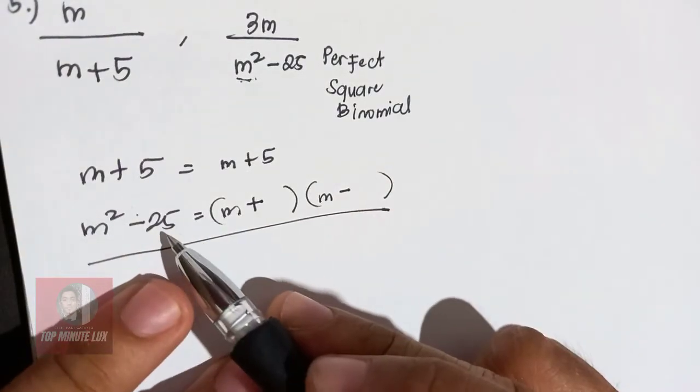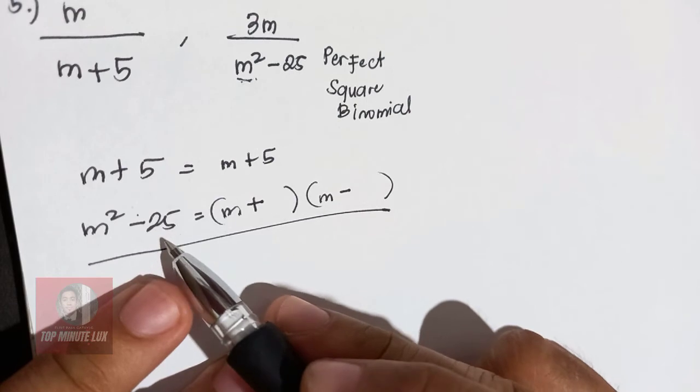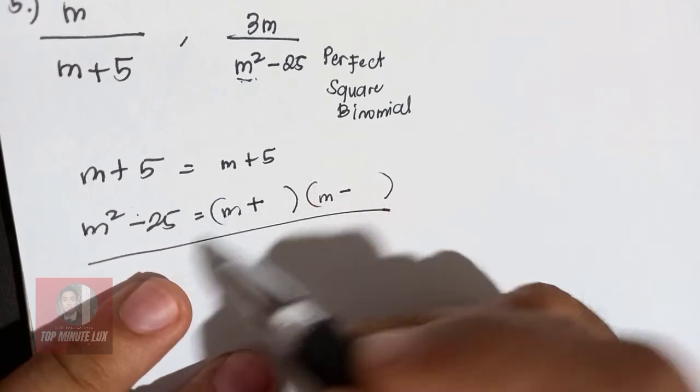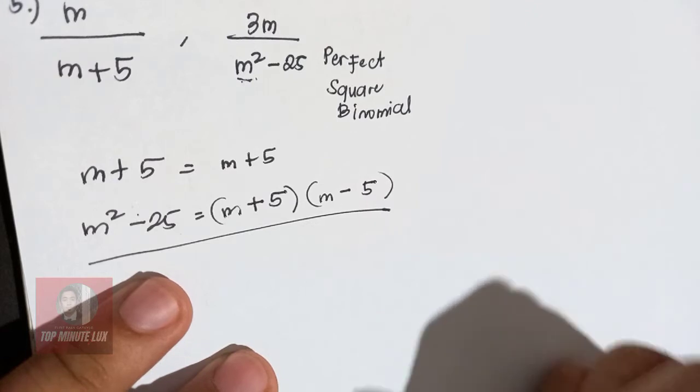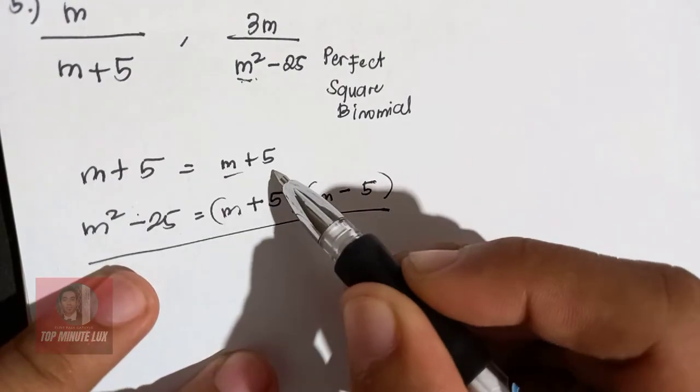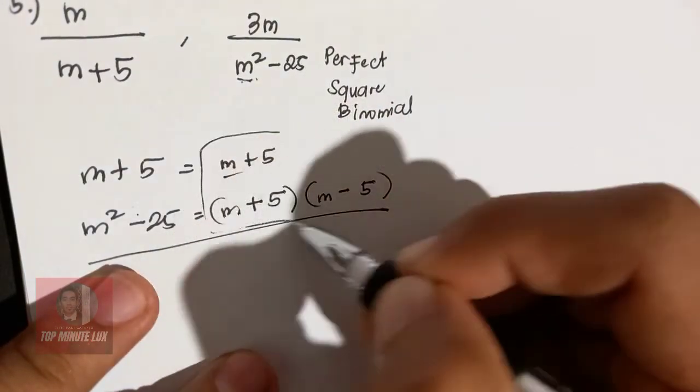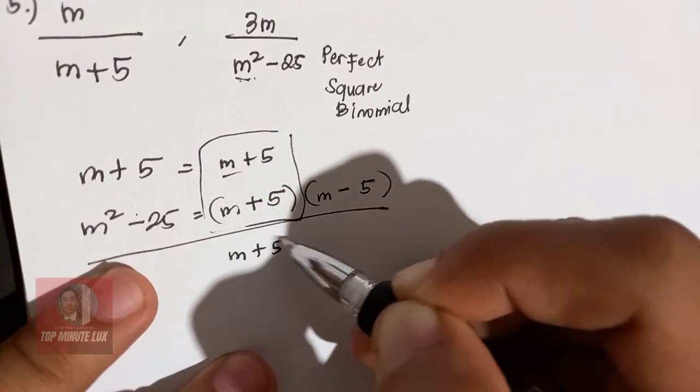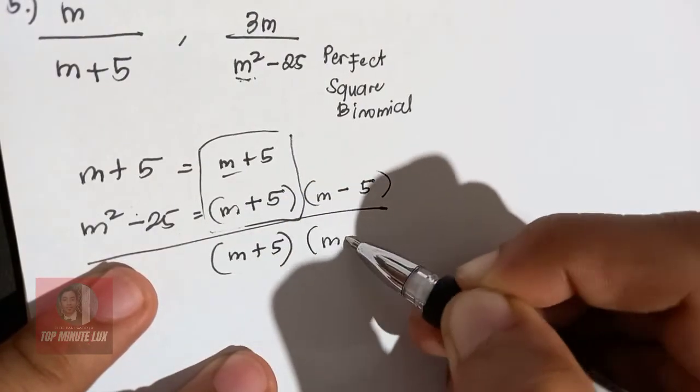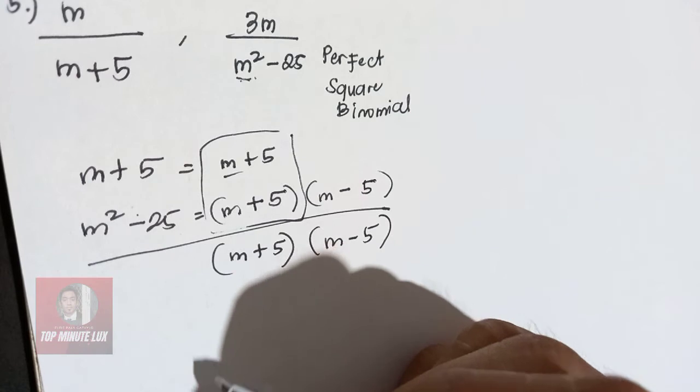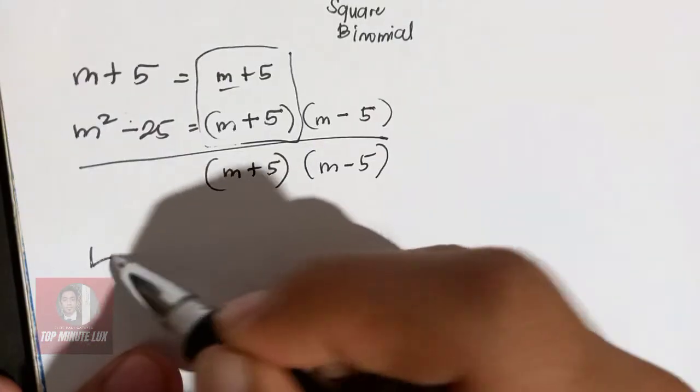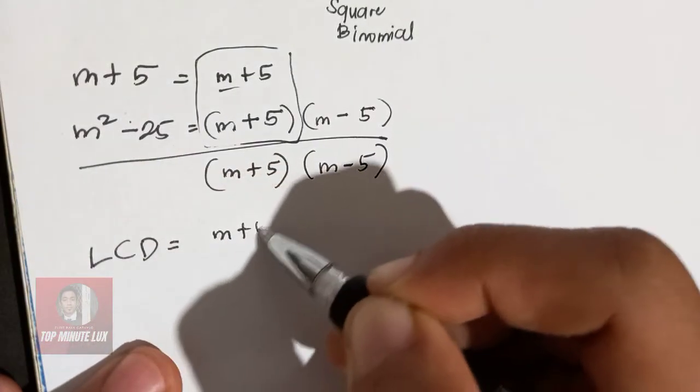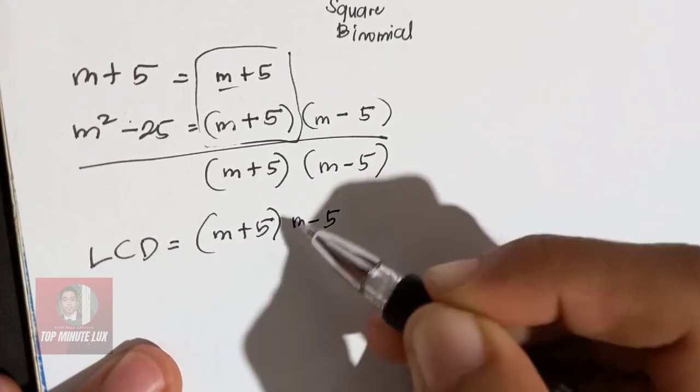Then the perfect square of your 25 is 5, because 5 times 5 will be 25. So 5 here, the other 1, 5. So the common here is M plus 5, M plus 5. It's common, so therefore, copy the common M plus 5, then bring down the M minus 5. So therefore, the LCD is M plus 5, then M minus 5.